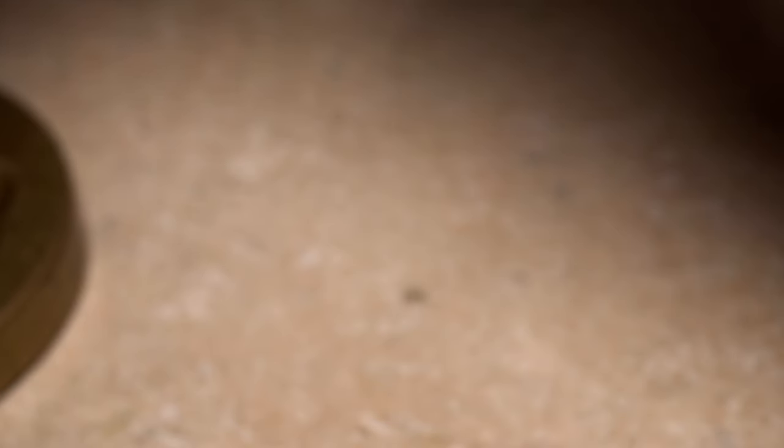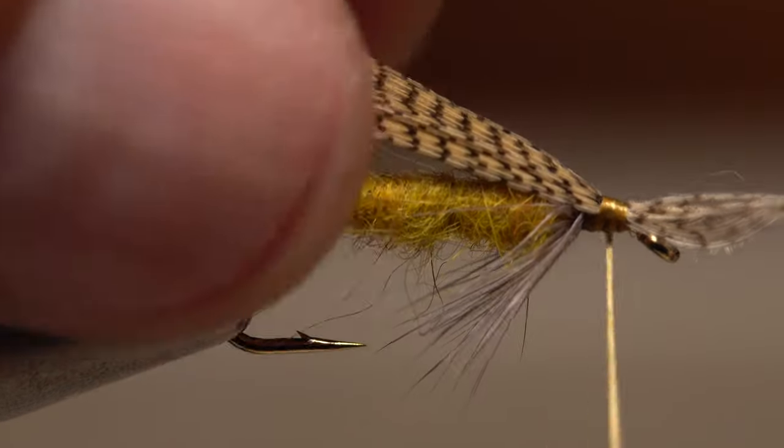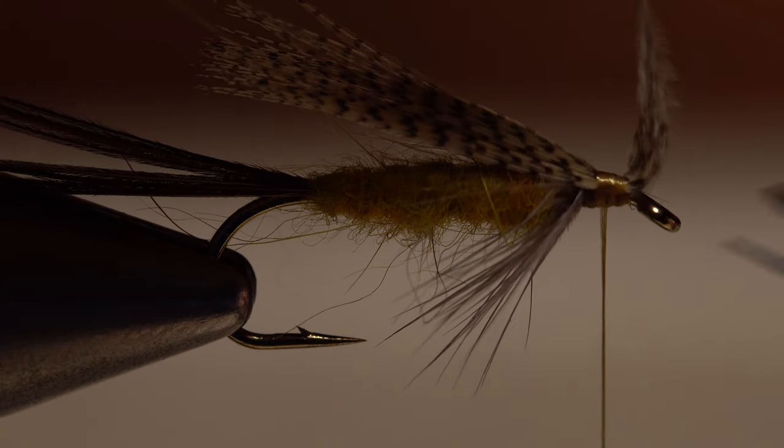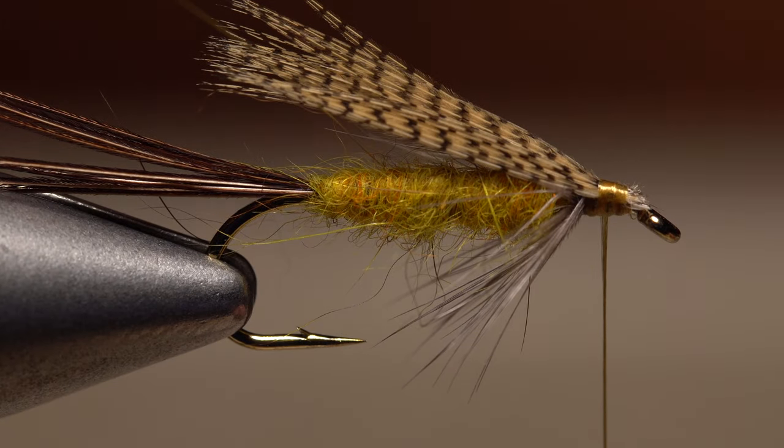Lay the clump on top of the hook shank so the tips extend to the back edge of the hook bend. Then take wraps of tying thread to secure it in place, like so. When you're happy with the wing, use your tying scissors to snip the butt end of the feather off at a shallow angle.